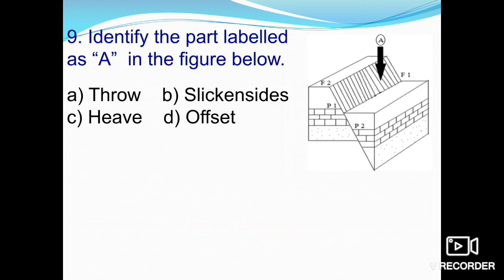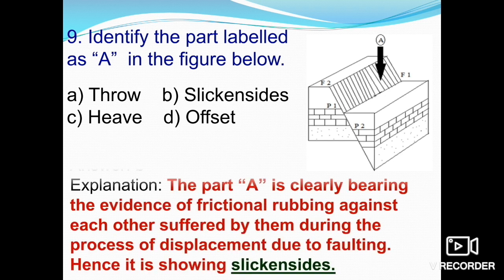The next figure-based question asks to identify the part labeled A in the figure — is it throw, slickensides, heave, or offset? The answer is slickensides. The labeled part is clearly bearing the evidence of frictional rubbing, suffered by the surface during the process of displacement due to faulting. So it is known as slickensides.